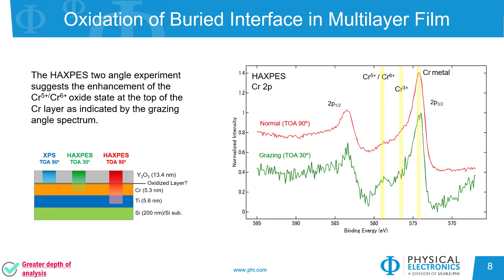We can use angle-dependent HAXPES measurements to learn more about the oxidation in the chromium layer. At a grazing takeoff angle of 30 degrees, there is a higher relative ratio of the chromium 5+ and 6+ states to the metal compared to the normal angle, suggesting the higher oxides are enhanced near the top of the chromium layer. In this case, it was useful that this analysis could be performed without the need for sputtering the sample to reach the buried interface.